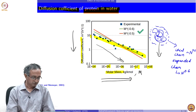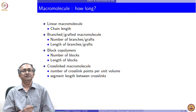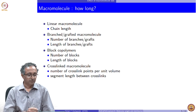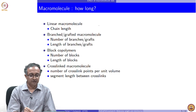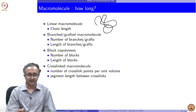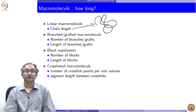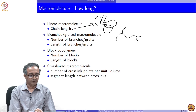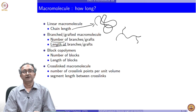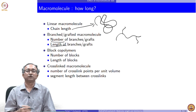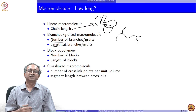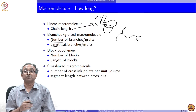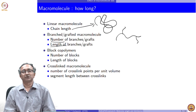Let us look at molar size in more detail. How long is a macromolecule? If it is a linear macromolecule, we just need to look at its chain length. But if it is a branched molecule, we need to look at the number of branches and the length of each branch. In terms of size of a macromolecule, we need to specify different things depending on the molecular architecture of that particular macromolecule.